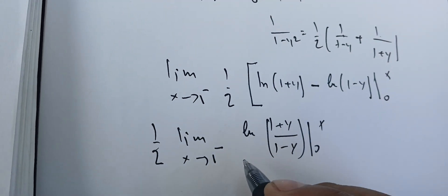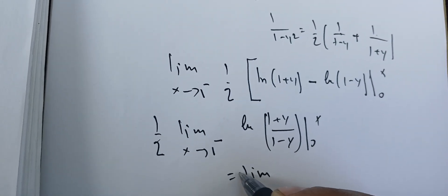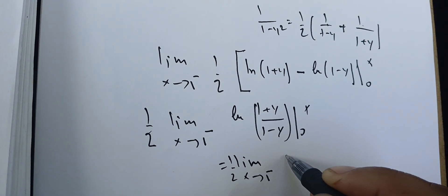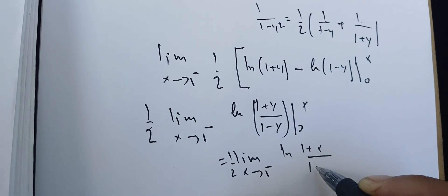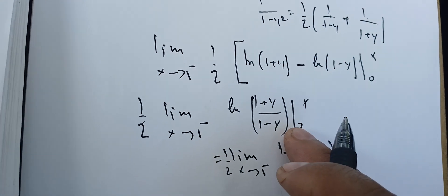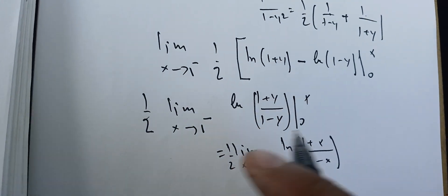So now let's see what we can get. This is just the limit one half, the limit as x goes to 1 from the left of the natural log of 1 plus x over 1 minus x. When y is 0, I'm going to have the log of 1 which is 0, so it doesn't appear here.